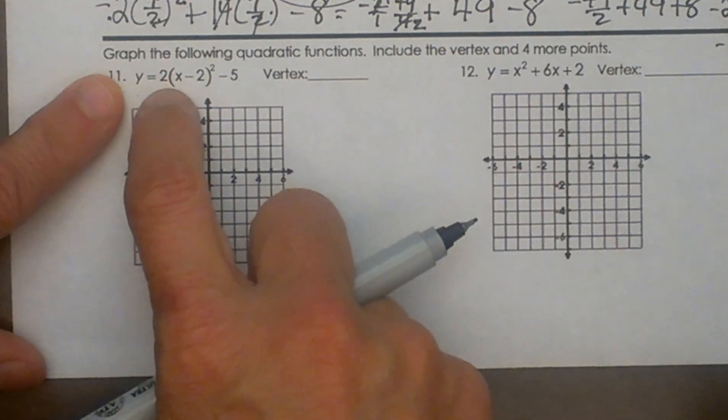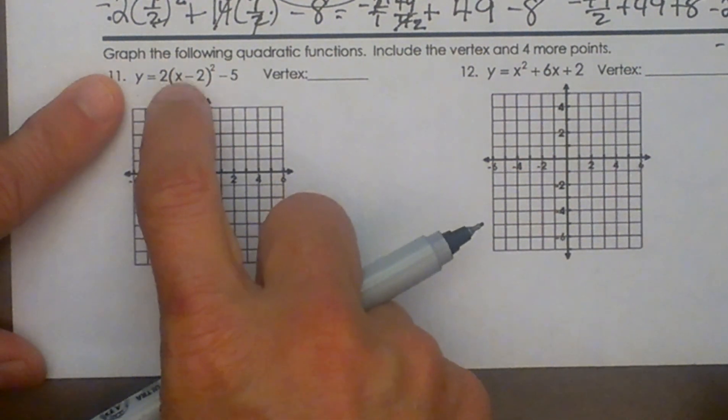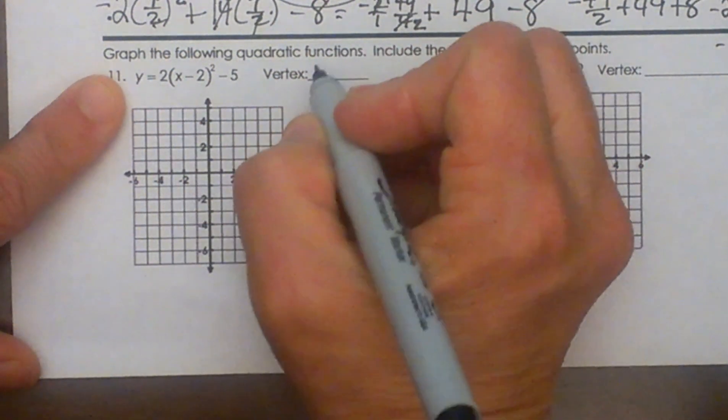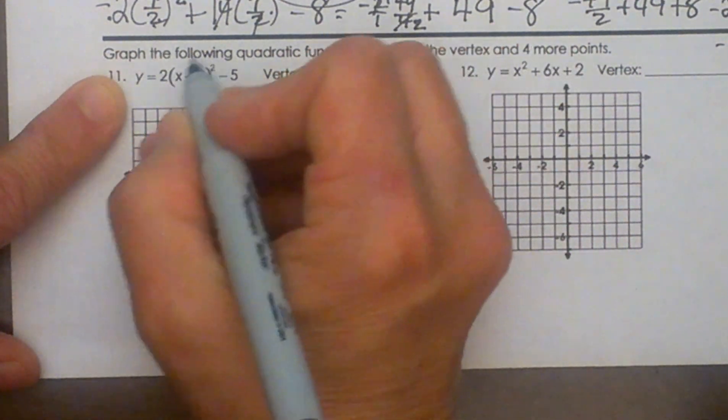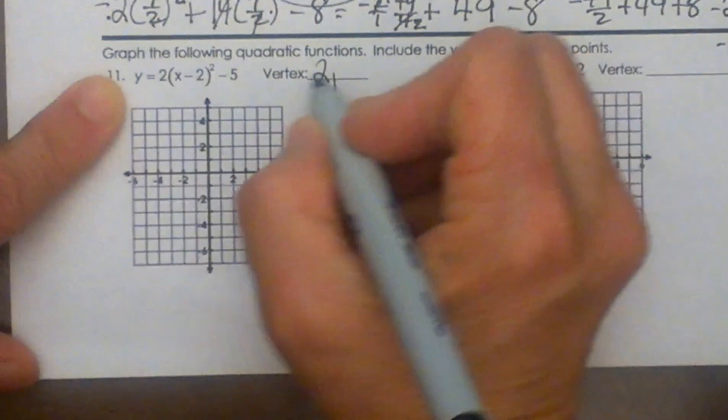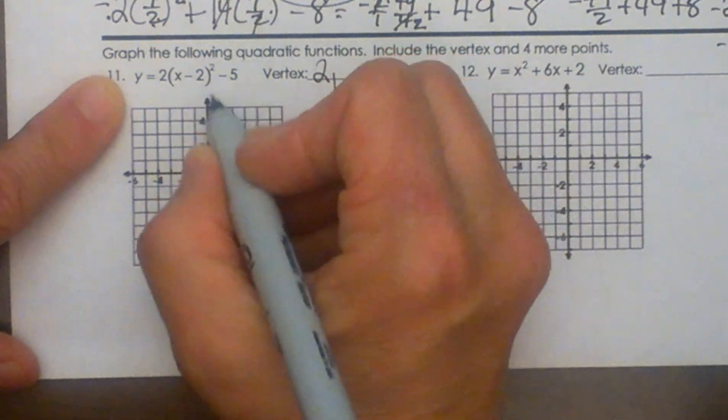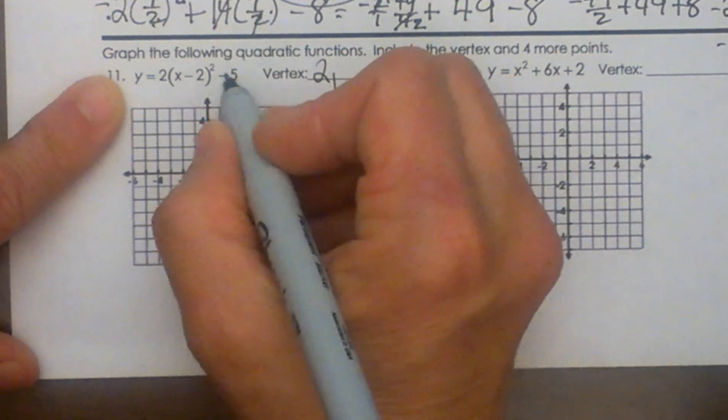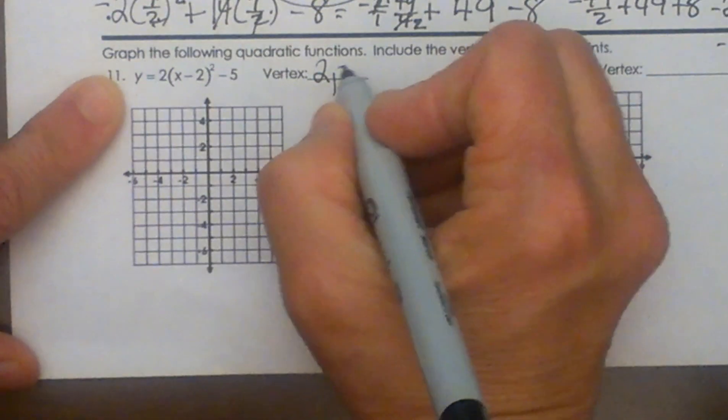It's y equals a times x minus h where h is my x coordinate so that's going to be positive 2. It's always the opposite sign from what you see in the formula plus k. Well k is the number on the outside of the perfect square. In this case it's negative 5.